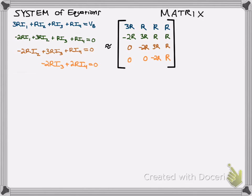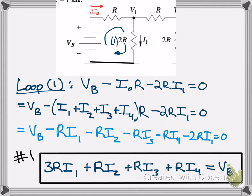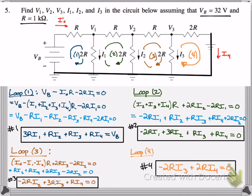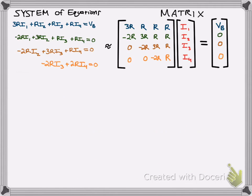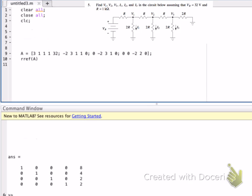You can also set up a matrix by taking the coefficients of the matrix there. And we're looking for the variables I1, I2, I3, and I4, and setting that equal to the regular coefficient. So 0 in this case, we subtracted here. We brought VB to the other side. So, but remember at the beginning of this problem, it says that R is equal to 1 kiloohms and VB is equal to 32. So you can actually plug those values in here to your matrix. And I'm going to show you what that looks like, what I did here in MATLAB.